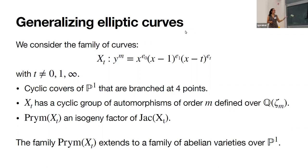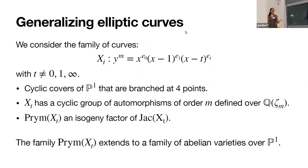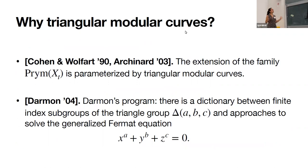These curves have a cyclic group of automorphisms defined over Q(ζ_m) when you multiply y by an m-th root of unity. From these, we can construct a prym variety — an isogenous factor of the Jacobian of these curves. The family of pryms extends to a family of abelian varieties over P¹. What triangular modular curves do for us is that the extension of these families is actually parametrized by these triangular modular curves, so understanding them means understanding these varieties.